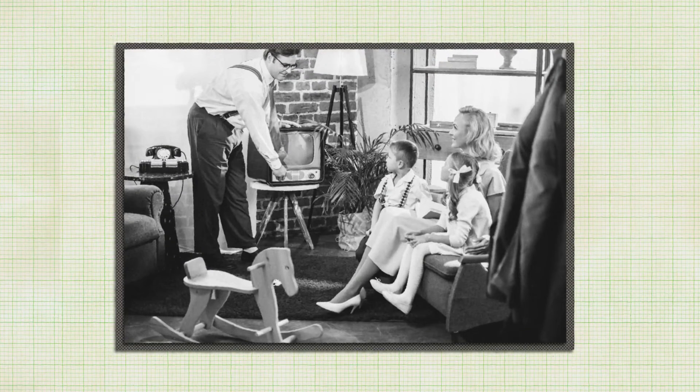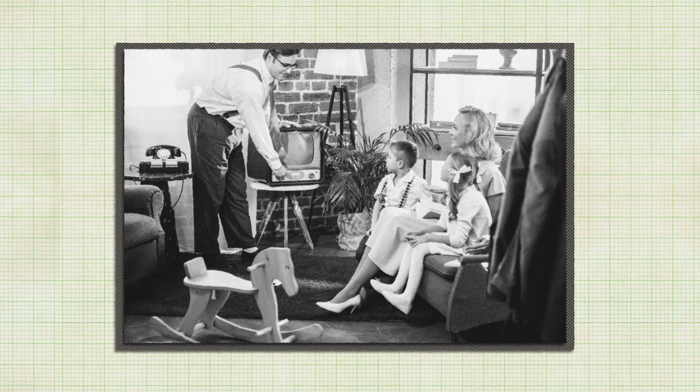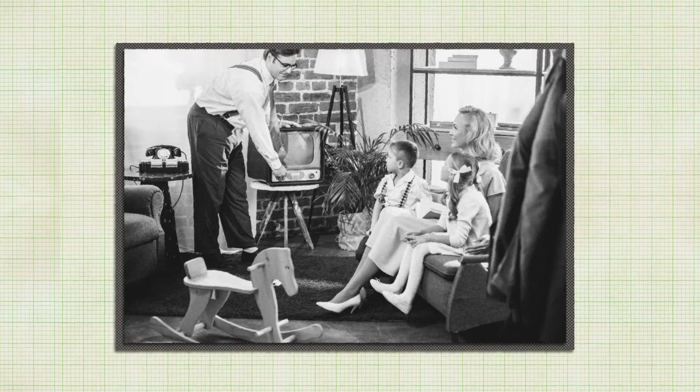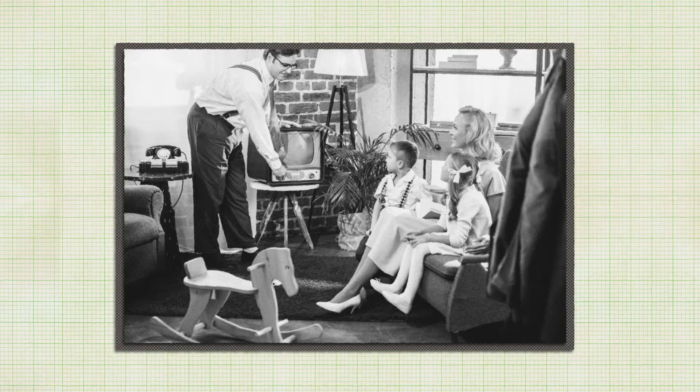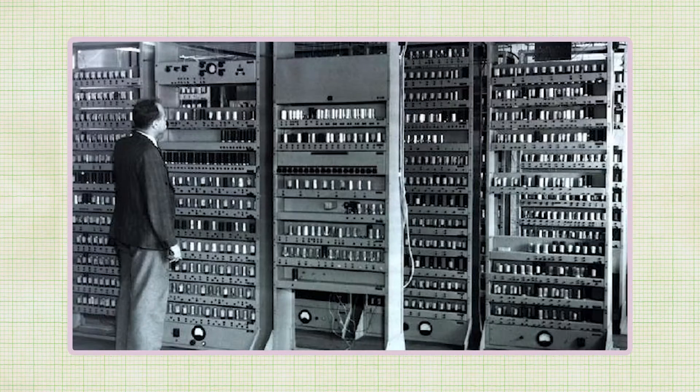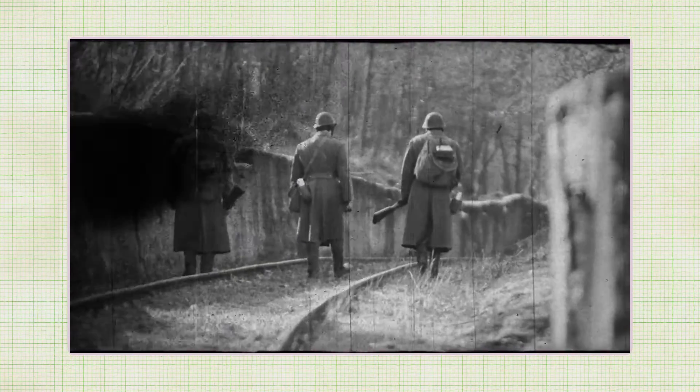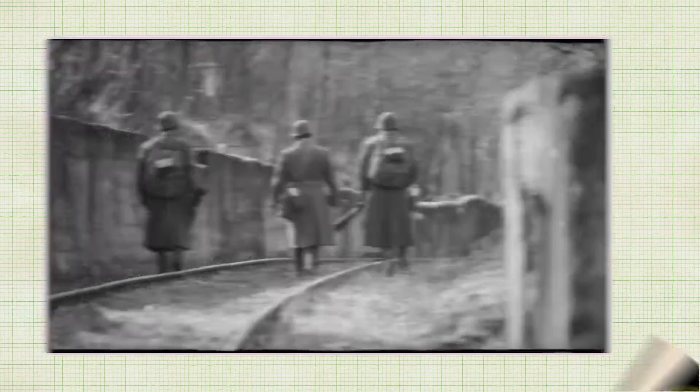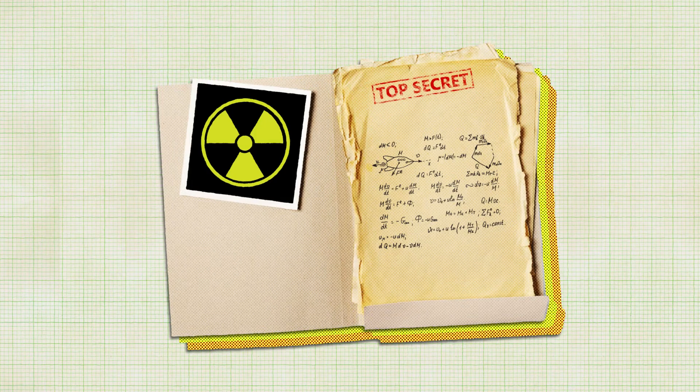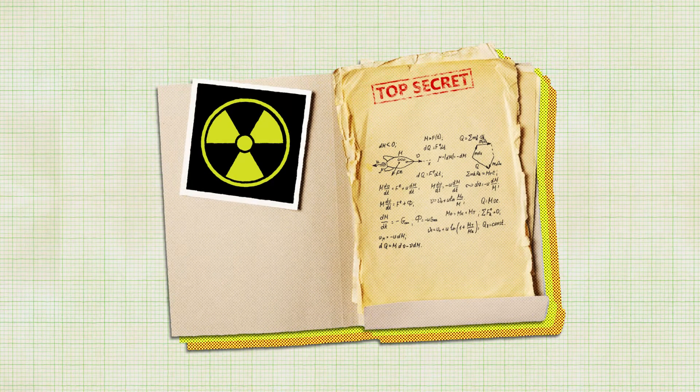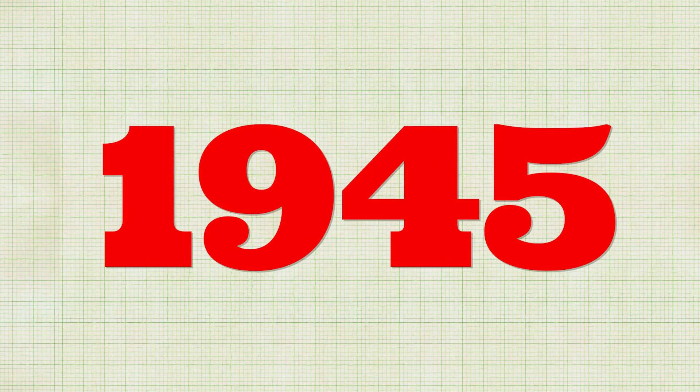Around the same time that most Americans were purchasing their first TV sets, scientists were making strides in developing a new technology that would soon alter the course of human history. The first electronic computers were built in the 1930s, and they were essentially oversized calculators. During World War II, Allied forces' attempts to decipher enemy transmissions, calculate ballistic trajectories, and develop nuclear weapons spurred rapid advances in technology. By 1945, American engineers developed the world's first programmable electronic general-purpose computer. They named it the Electronic Numerical Integrator and Computer. The press called it a magic brain.